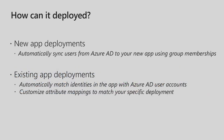How can it be deployed? If you are deploying one of the supported applications for the first time, the user provisioning service allows you to automatically create accounts and grant access for all users who need it based on group memberships in Azure Active Directory.